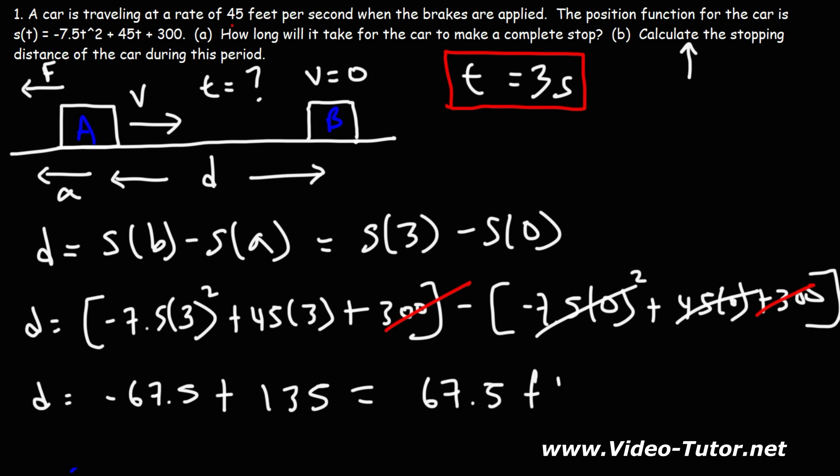And the displacement is going to be in feet. So that is the displacement of the vehicle during the first three seconds. Since it's not changing direction in those three seconds, that's going to be the distance that it travels, which is also the stopping distance of the car during that period. So that's how you can calculate it using calculus if you're given the position function.